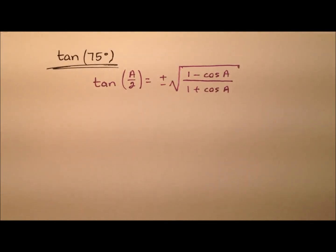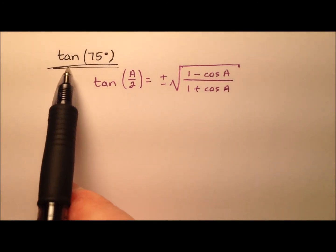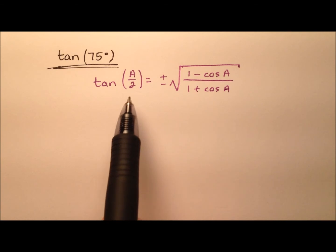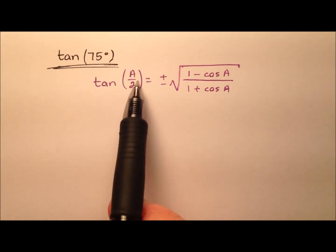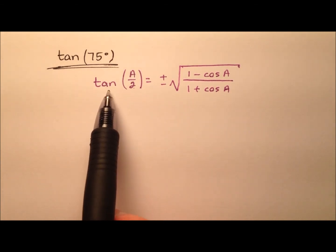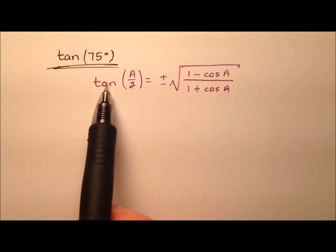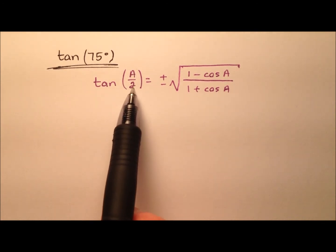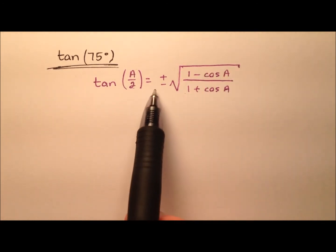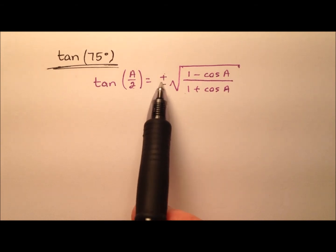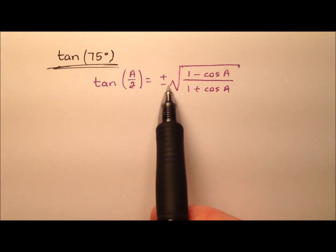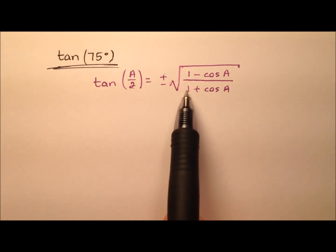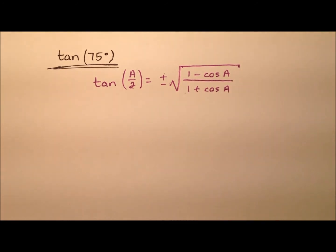In this second approach, we'll once again be looking for the exact value for the tangent of 75 degrees, but using the half-angle identity. We have the tangent of some angle a divided by 2, equal to plus or minus the square root of 1 minus cosine of a over 1 plus cosine of a.